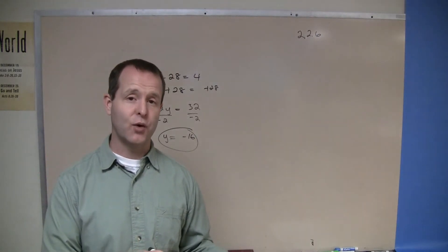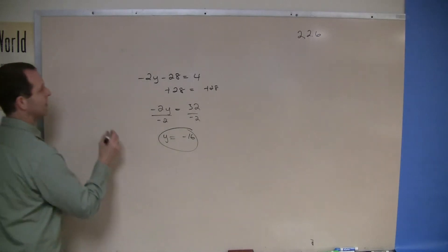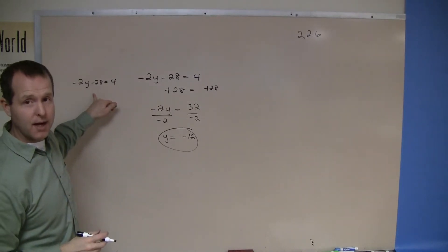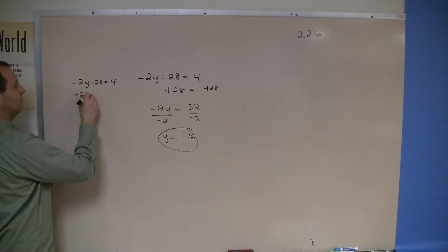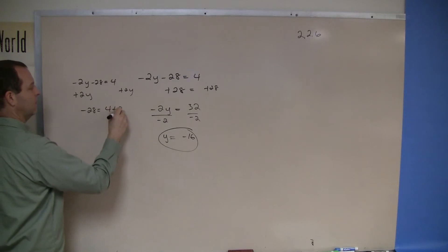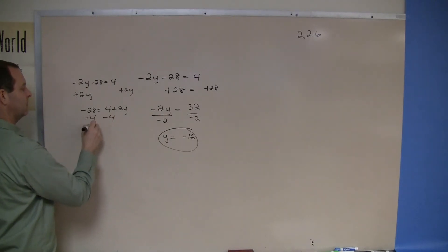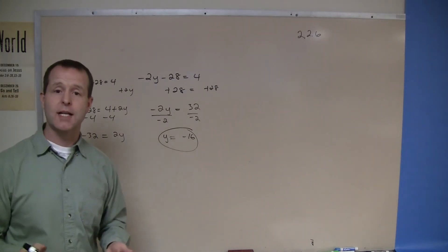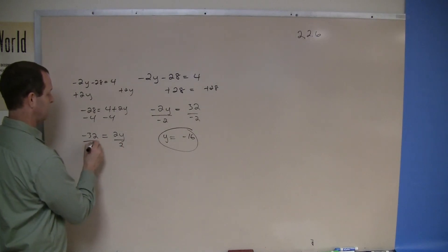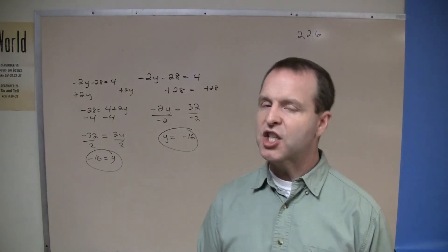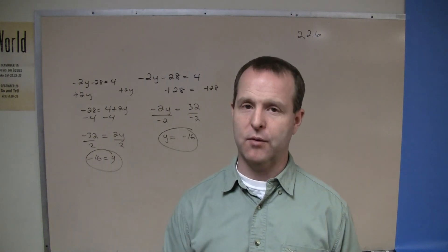The reason why I said you can go a different direction and still get there would be if I did this. Let's say, for example, I want to add a positive 2y to both sides. Because it was really important for me to have a positive y. Now I'm going to subtract 4 from both sides. And now I'm going to divide both sides by a positive 2. I got to the same solution, just got there a different direction, but I obeyed all the traffic rules in getting there.